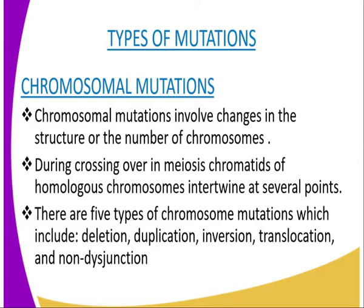We can go deep into the types of mutations. In general, there are two types of mutations, which include chromosomal mutation and gene mutation. We are going to start with chromosomal mutation. Chromosomal mutations involve changes in the structure or number of chromosomes. During crossing over in meiosis, chromatids of homologous chromosomes intertwine at several points, which is the chiasmata. Breaking of chromosomes at the chiasmata creates plenty of opportunity for various changes on the chromatids, leading to chromosome mutation.